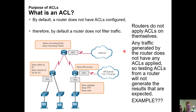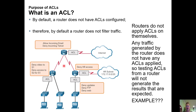Routers do not apply access control lists on themselves. Any traffic generated by the router does not have any access control list applied. In other words, access routers communicate back and forth — they're sharing information amongst each other in order to learn about routes or maybe learn about protocols that are running on those routers.